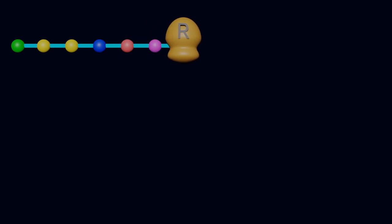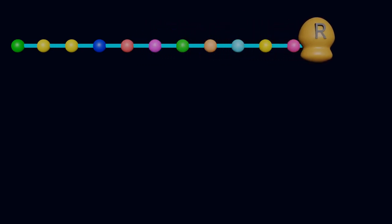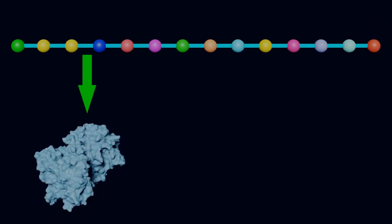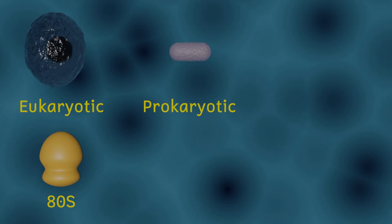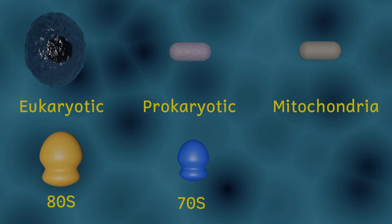In addition, all cells require structures called ribosomes. The job of ribosomes is to join amino acids together using the instructions from the DNA in order to make proteins. Eukaryotic cells have a particular type of ribosome — the ribosomes in eukaryotic cells are 80S. This just refers to how big the ribosomes are. Prokaryotic cells on the other hand have slightly smaller ribosomes — these are 70S ribosomes. Mitochondria also have their own ribosomes that they use to make their own proteins. And what do you know? The ribosomes that mitochondria have are 70S ribosomes, exactly the same type that bacterial cells have.